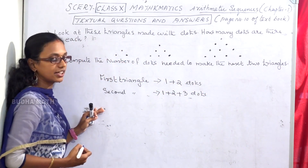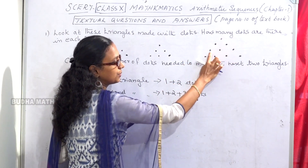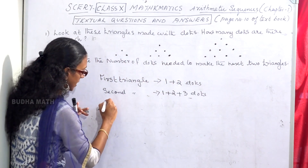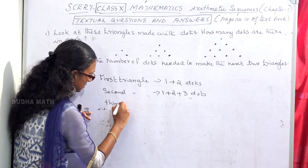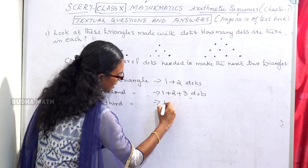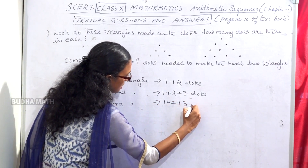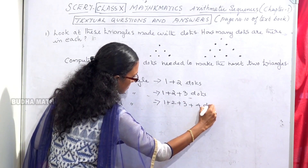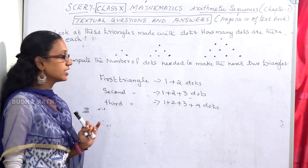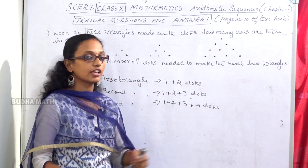Third triangle: 1, 2, 3, 4. That is 1 plus 2 plus 3 plus 4 dots. Compute the number of dots needed to make the next two triangles.